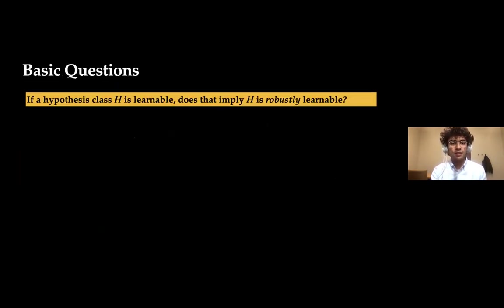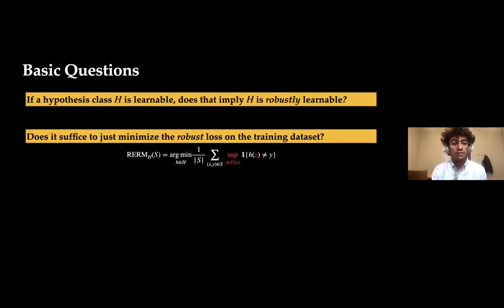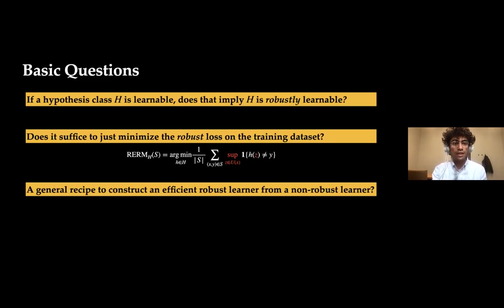Notice that the adversary U is known to the learner. With this setup, in this talk we will explore three basic questions. First: if a hypothesis class H is learnable non-robustly — if it has finite VC dimension — does that imply H is robustly learnable? Second: does it suffice to just minimize the robust loss on the training dataset? Third: is it possible to construct a general recipe to construct an efficient robust learner when given only non-robust learners?